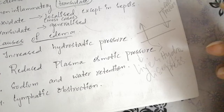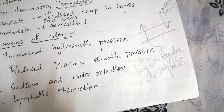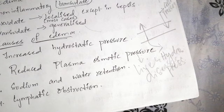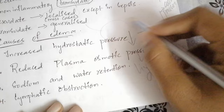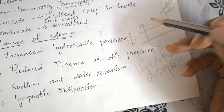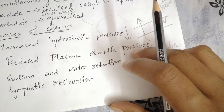In nephrotic syndrome, as protein is excreted through the urine, the amount of plasma proteins decreases, effectively diluting the blood. This decreases plasma osmotic pressure, which leads to increased hydrostatic pressure effect, making fluid move out of blood vessels into the interstitial spaces or body cavities.